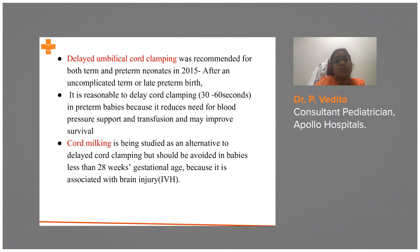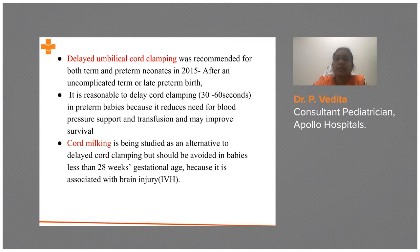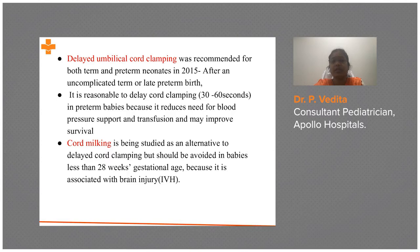Since 2015, it is recommended to delay umbilical cord clamping. This decreases the need for blood transfusion as well as inotropes, because it maintains blood pressure support and improves survival. It can be delayed between 30 seconds to 60 seconds — usually one minute — then we clamp and cut the cord. Cord milking is being studied as an alternative to delayed cord clamping, but definitely not in gestational age less than 28 weeks because it is associated with brain injury.